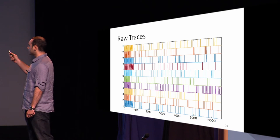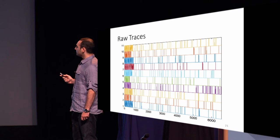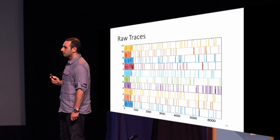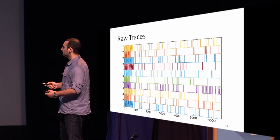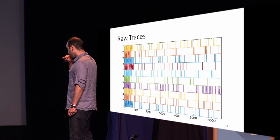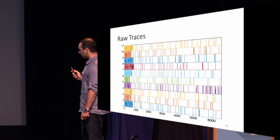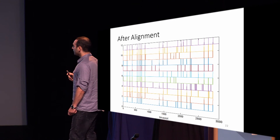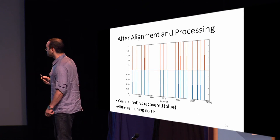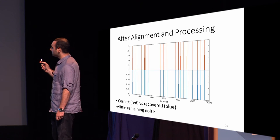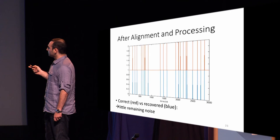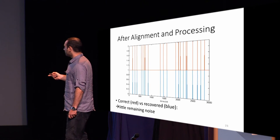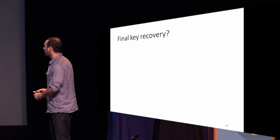These are raw traces obtained from Amazon EC2 — 11 different traces all belonging to operations with the same secret key. Each vertical line represents an access, meaning a reload time higher than the baseline profile. As you can see, the traces are completely unaligned because we don't assume synchronicity with the target. After alignment, the result is still too noisy and needs further processing and filtering. After noise reduction, the red line is the expected correct trace and the blue is our recovered trace. There is still very little remaining noise — for example, where the expected trace has four accesses, we recover three, or where there is one access we recover two.